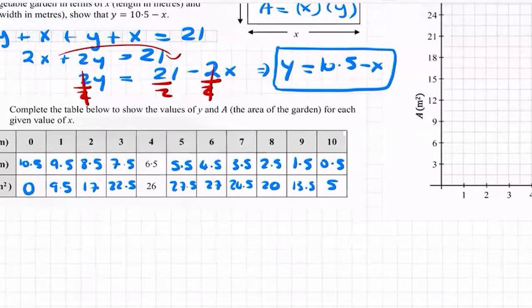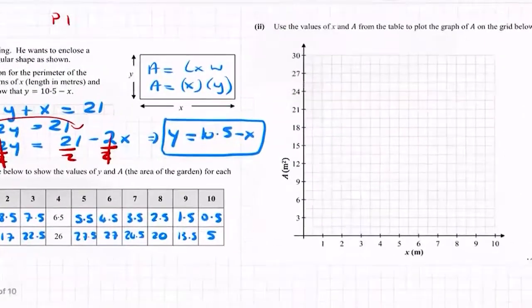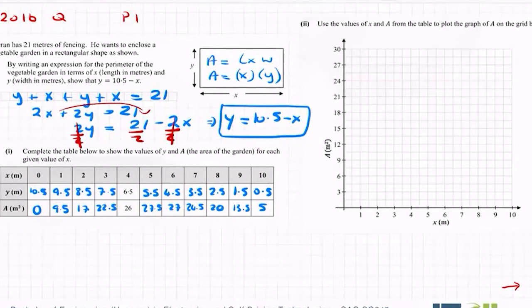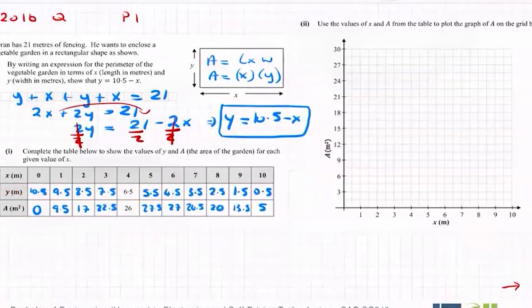That table is done. Then it says use the values of x and a from the table to plot the graph of a on the grid below. So here are my x values across here and on the y-axis is area. I'm plotting the first line which is x and the bottom line which is area, so nowhere on the graph is it looking for y.